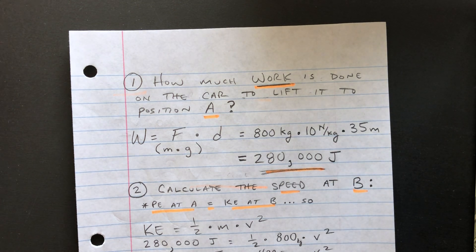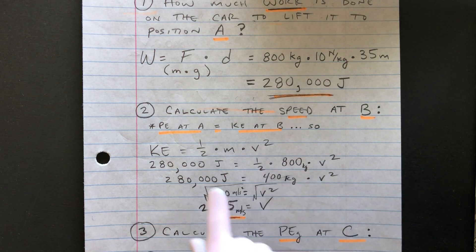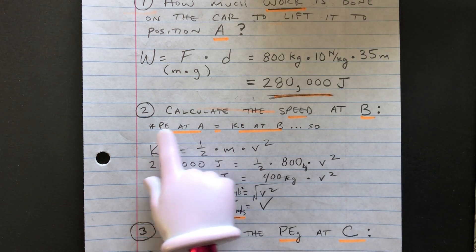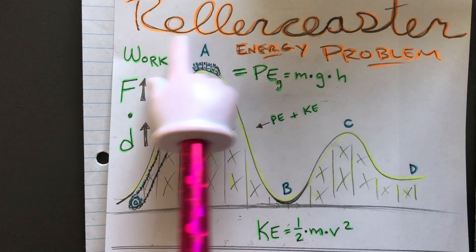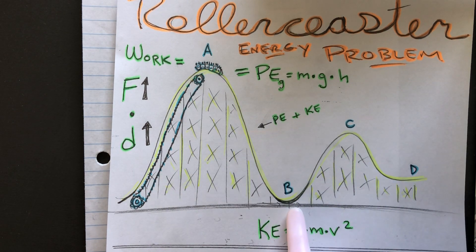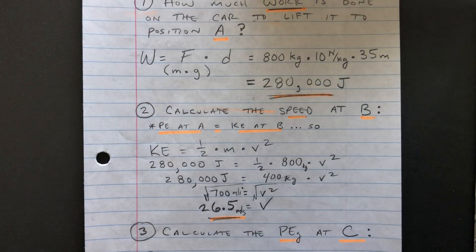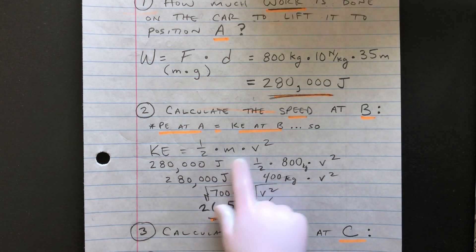What about if you wanted to calculate the speed at B? Well, one of the things you have to realize is the potential energy at A equals the kinetic energy at B. That means all of this potential energy at A would turn to all kinetic at the lowest point at B. So again, you would have kinetic energy, 1 half m V squared.